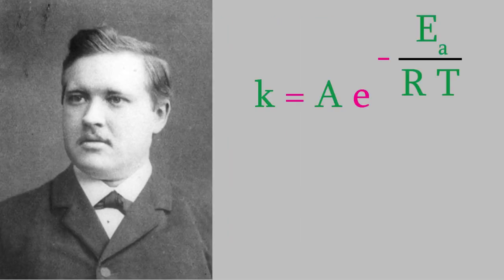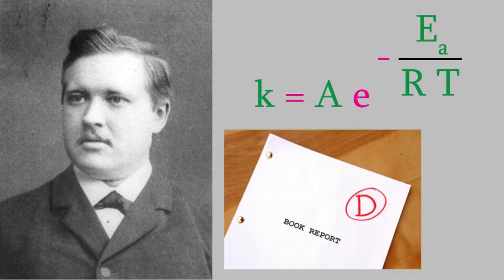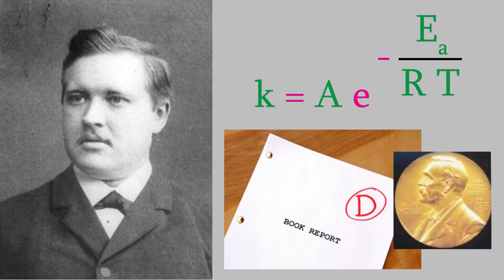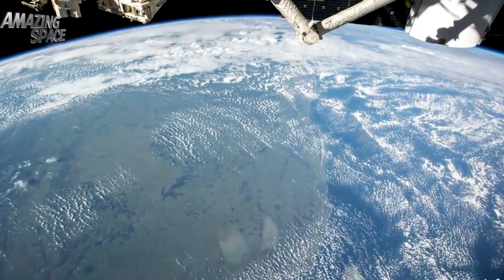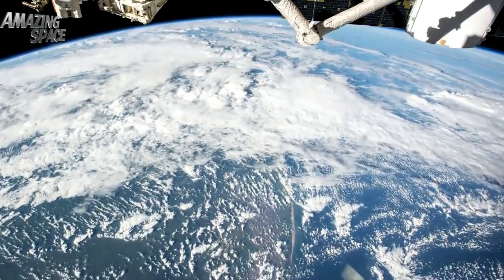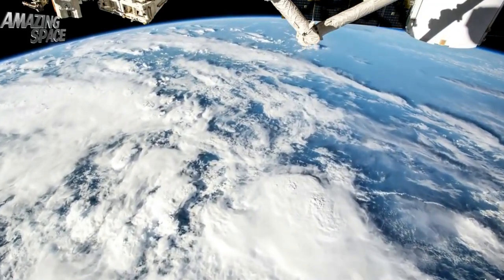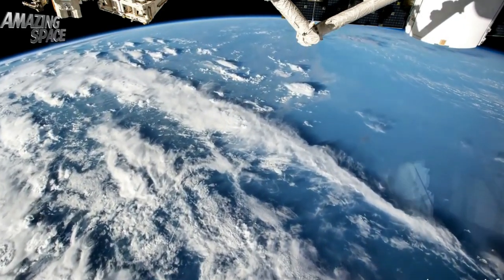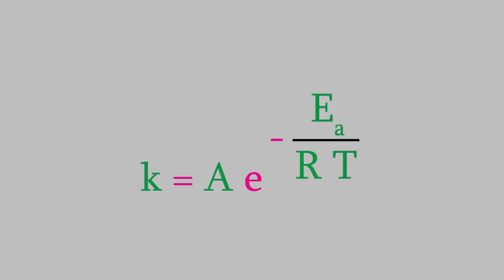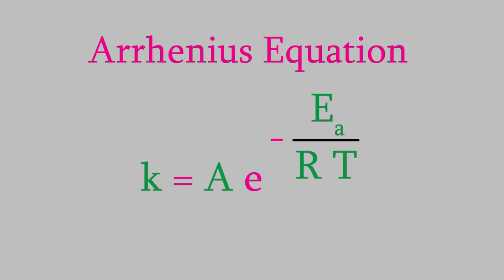Arrhenius developed this equation in 1884 as part of his graduate school dissertation, and it was very different from the way that most people at the time thought that chemical reactions should work. The professors who reviewed his dissertation were so sure that his ideas were wrong that they gave him the lowest possible passing grade — it's as though they had given him a D. But within 20 years, his ideas were so important and so widely accepted, he won the Nobel Prize for Chemistry in 1903. Arrhenius was also very interested in the Earth's atmosphere, and he studied the way that the Earth's climate has changed over the years because of changes in the levels of carbon dioxide. He was the first prominent scientist to realize that CO2 produced by human activity could cause warming of the Earth's climate.